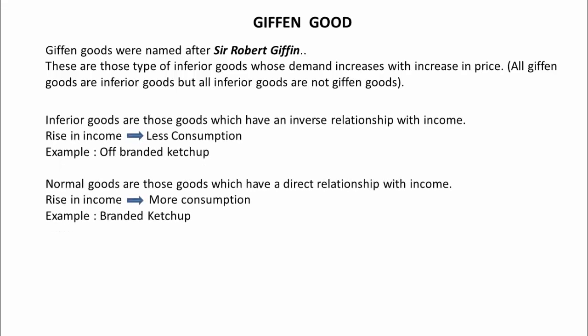If you are not familiar with normal goods and inferior goods, then for now just keep in mind that inferior goods are those goods which have an inverse relationship with income. So if your income rises, then you consume less of it — for example, off-branded ketchup. On the other hand, normal goods are those goods which have a direct relationship with income, so if your income rises you consume more of it — for example, branded ketchup. You may follow the link in the description for a brief discussion on normal goods and inferior goods.